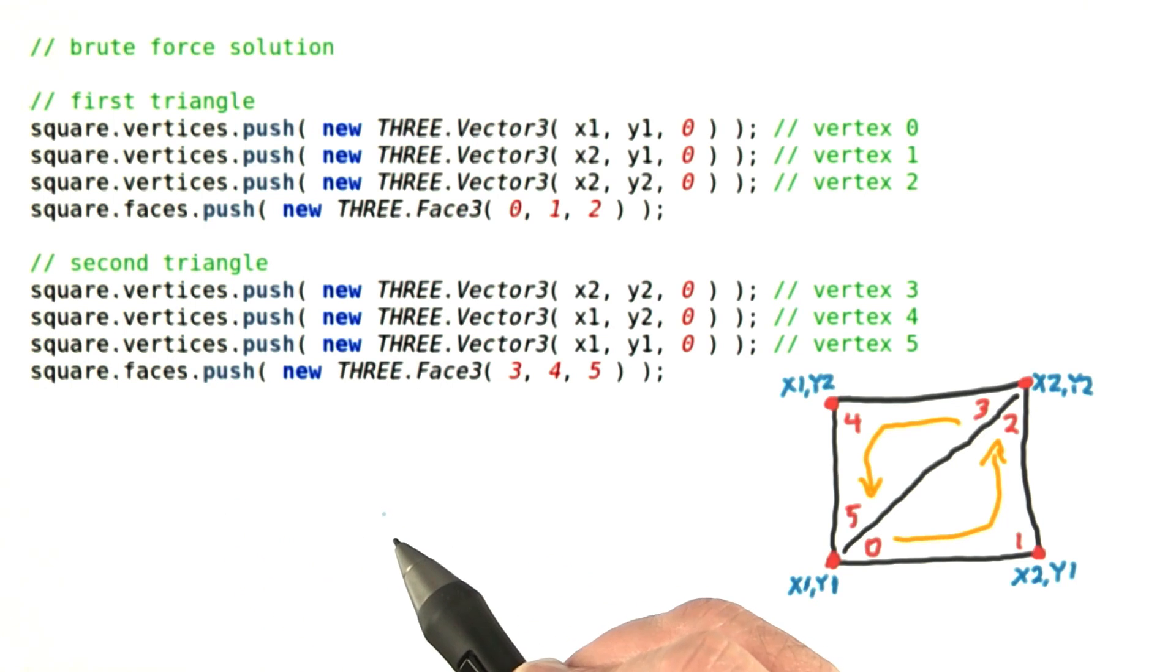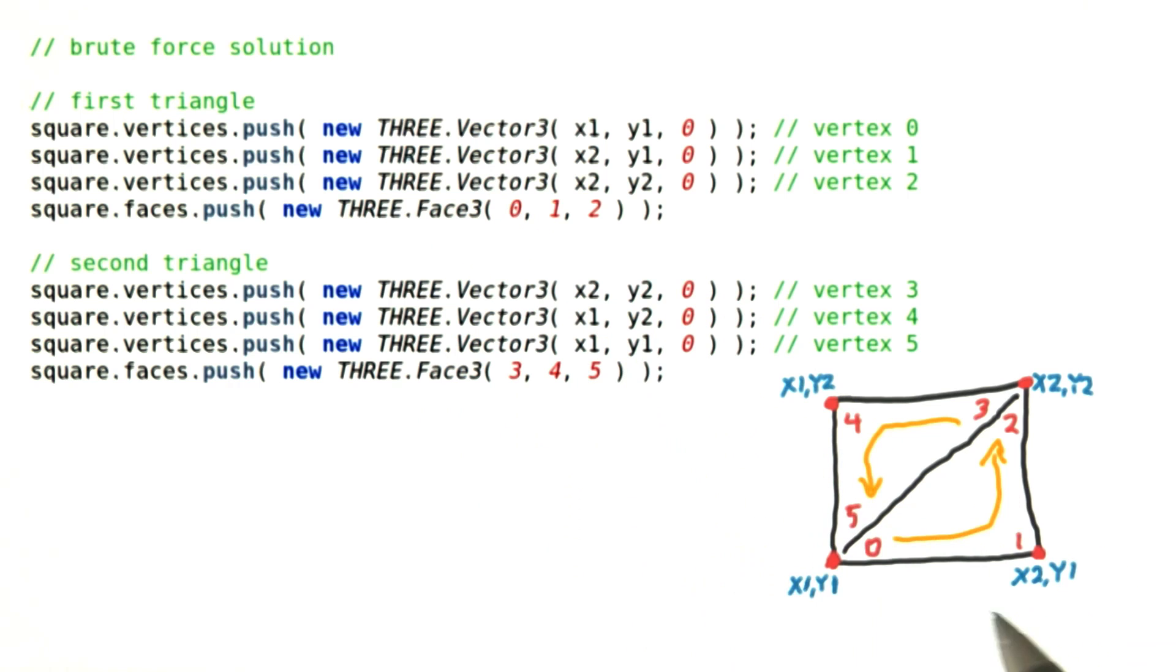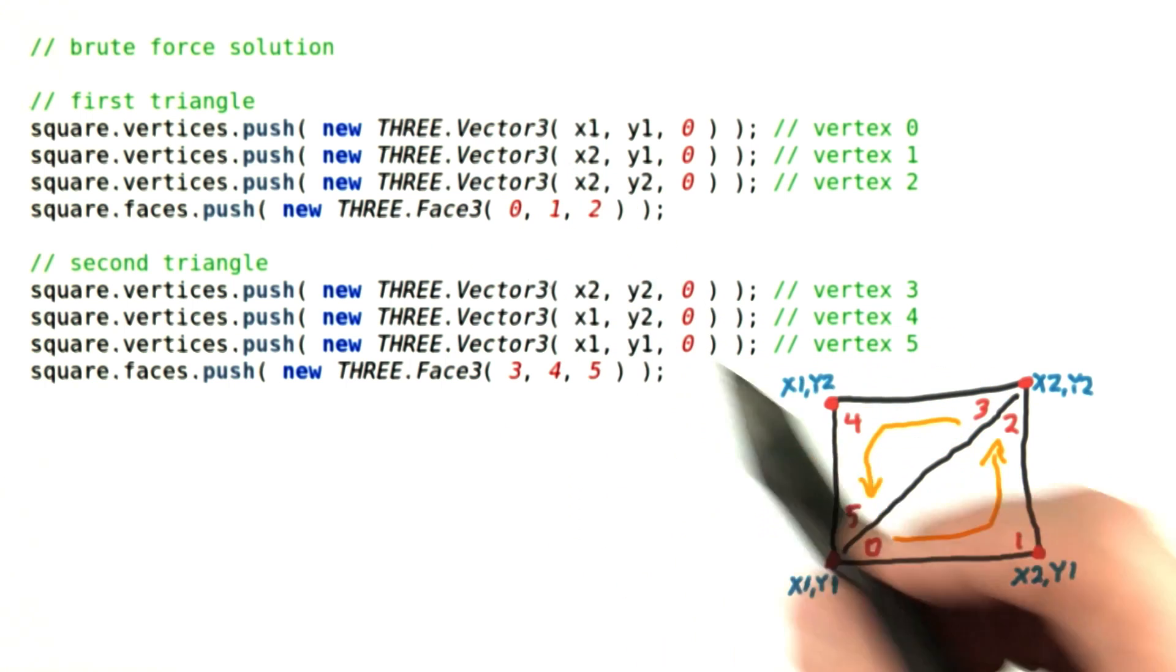It turns out there are many ways to specify a square. One solution with triangles is a bit brute force. What you do is you create two triangles independent of each other.